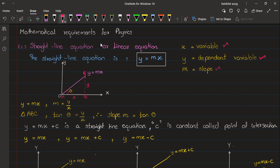Looking at the straight line equation, the solution is y equals mx. The slope m can be calculated where m equals y over x. This gives us the straight line equation.